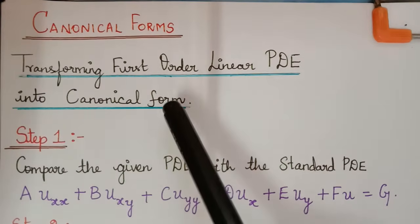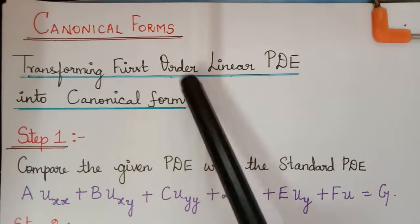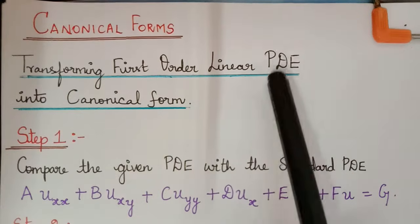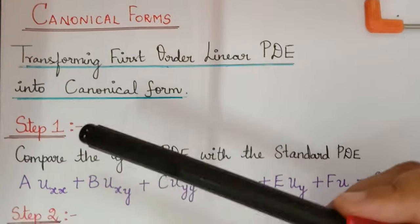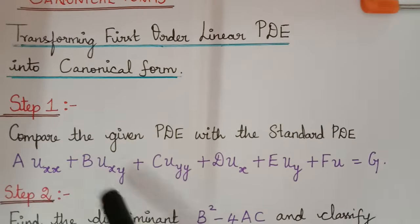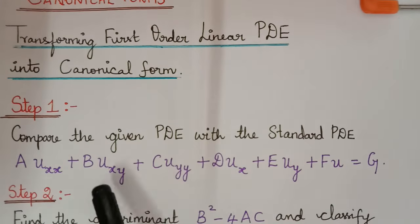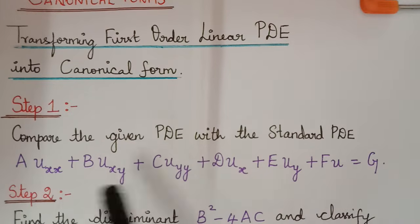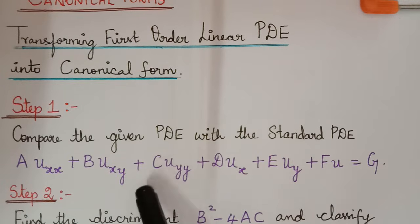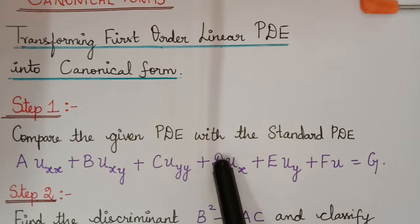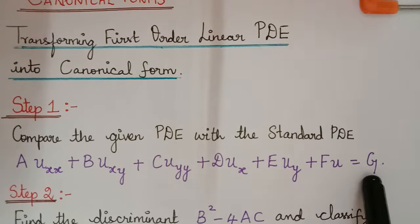Hello students. Under the topic canonical forms, we are going to learn how to transform a first order linear partial differential equation into canonical form. So step 1: first of all we have to compare the given partial differential equation with the standard PDE, which is given by A·Uxx plus B·Uxy plus C·Uyy plus D·Ux plus E·Uy plus F·U equals capital G.